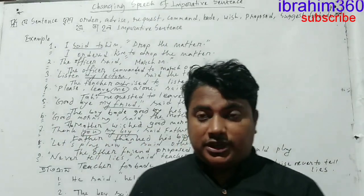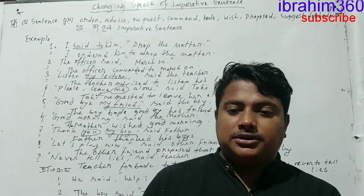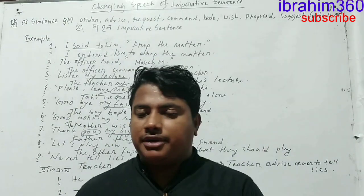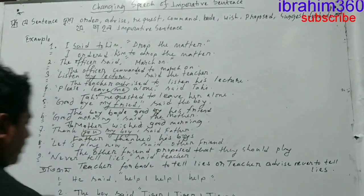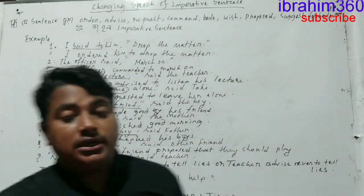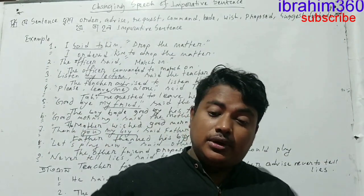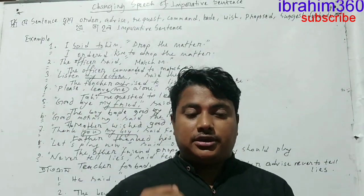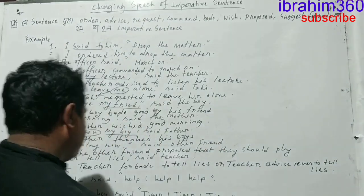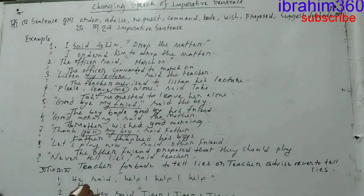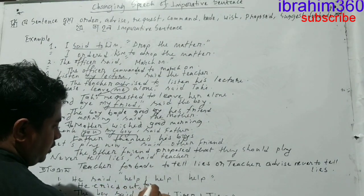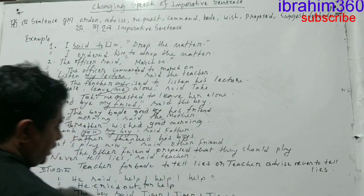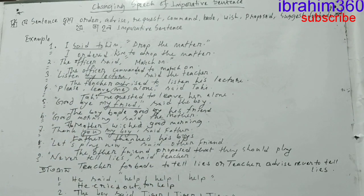Some imperative sentences we find that seem different. Those do not express wish, request, advice, or prohibition — they express something else. For example: he said 'help, help, help'. Actually 'help help help' — with repeated 'help' — she cried out. So here we write: he cried out for help, or cried out to help, or for helping.